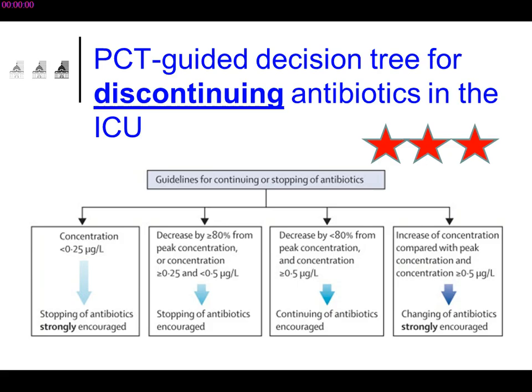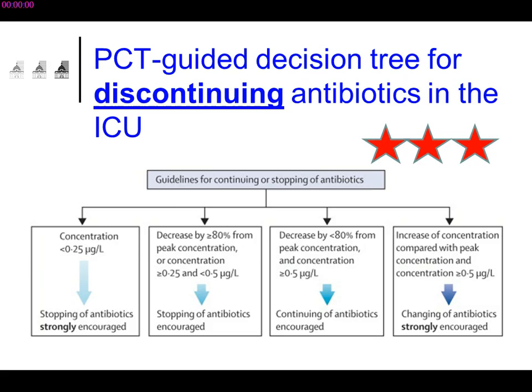They suggested a scale based on the kinetics of the marker. This is an argument in favor of stopping antibiotics when the concentration becomes very low — with Lavois and Michel Voff: when the marker is below 0.25, or when it has decreased by over 80% compared to the initial peak concentration, it is probably a strong point in favor of discontinuing antibiotics.